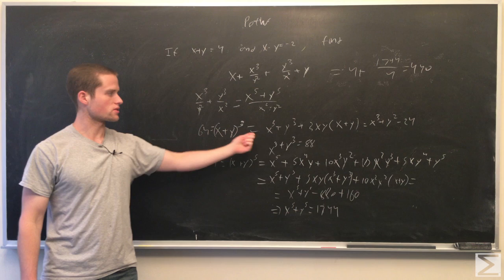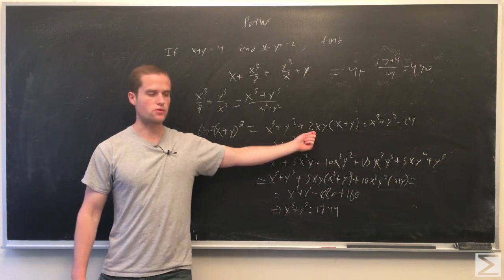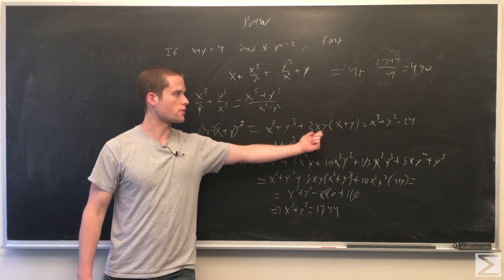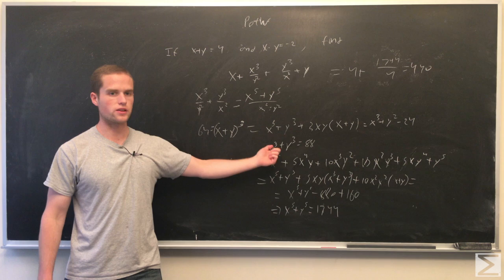We get 64 equals x cubed plus y cubed plus 3xy times x plus y, which is just minus 24. So we get x cubed plus y cubed equals 88.